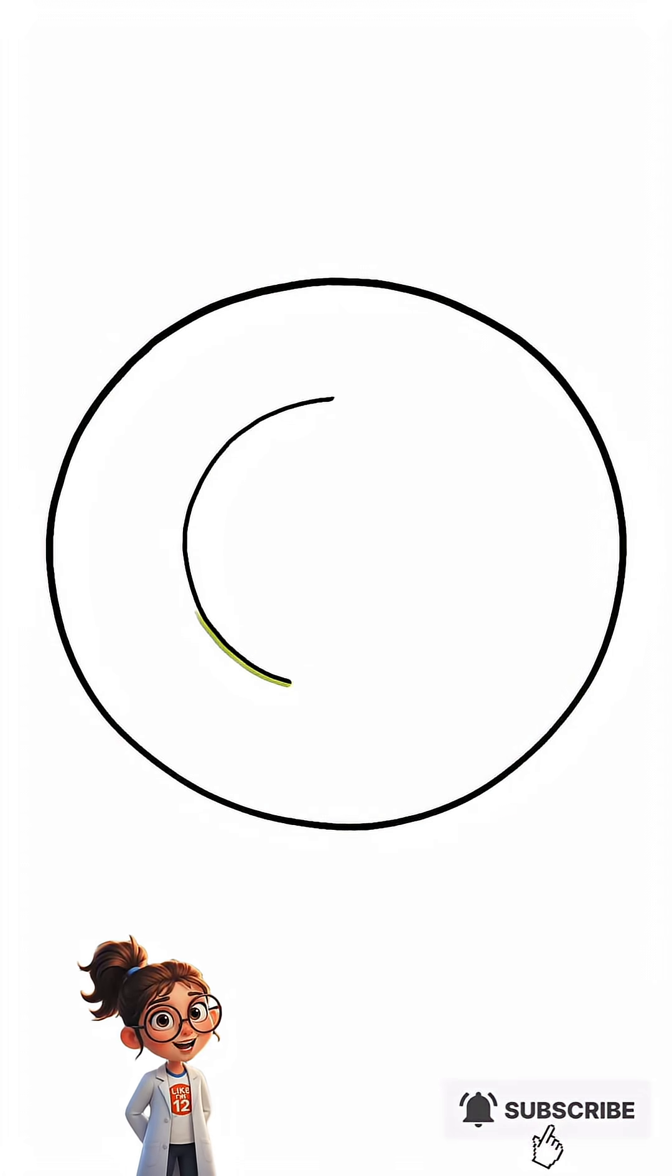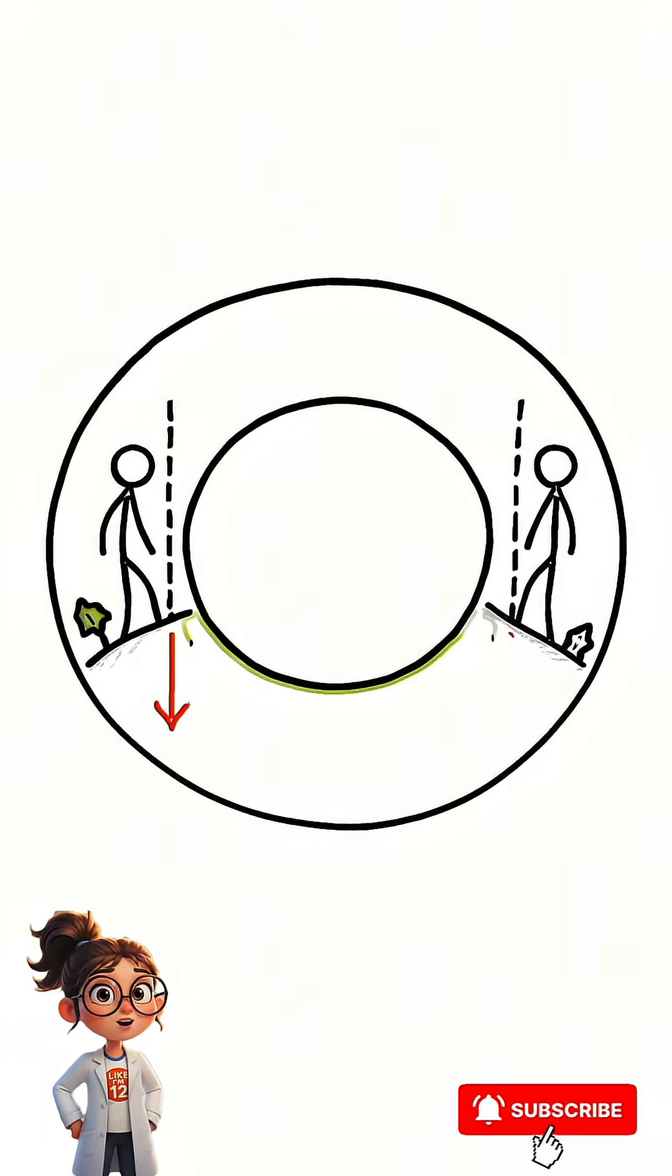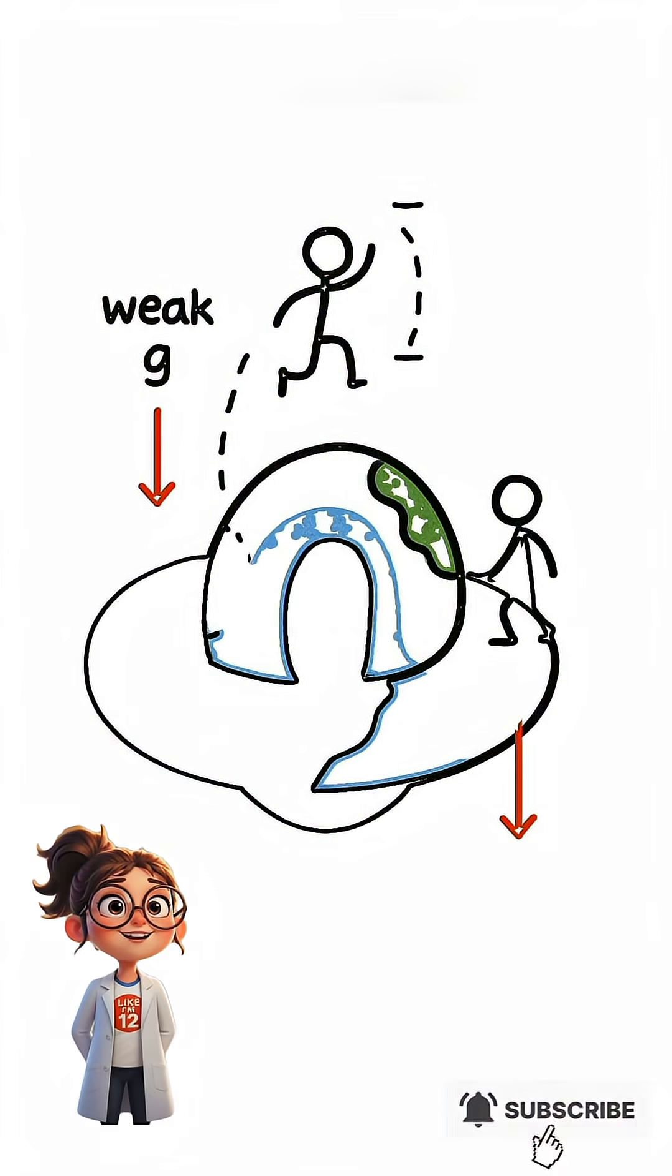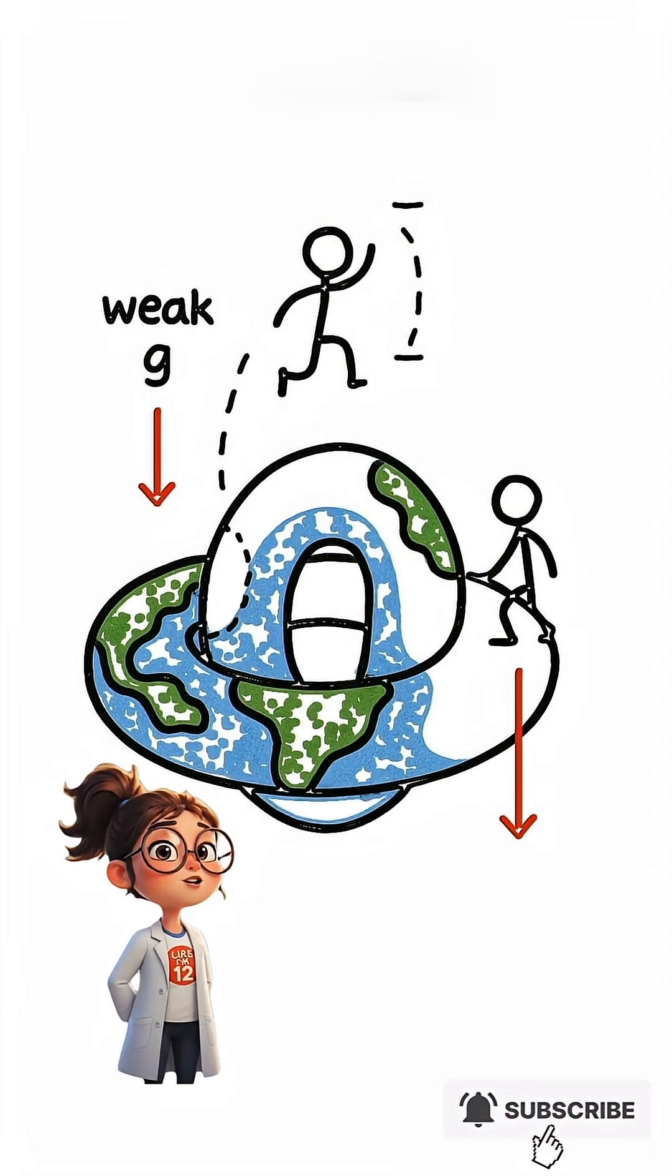So on the inner and outer slopes, it would feel like you're constantly living on the side of a hill. But right on the top or bottom of the ring, gravity would be weaker. You could jump way higher.